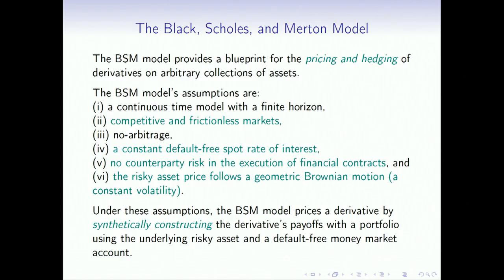I'm going to start with the Black-Scholes and Merton option pricing model. The BSM model provides a blueprint for the pricing and hedging of derivatives on arbitrary collections of assets. A model is a mathematical abstraction of some phenomenon — in this case, a financial market — and a model is uniquely determined by its assumptions. The implications of the model are just mathematical deductions based on the assumptions. So to understand the model and my extensions of it, we have to talk about the assumptions.